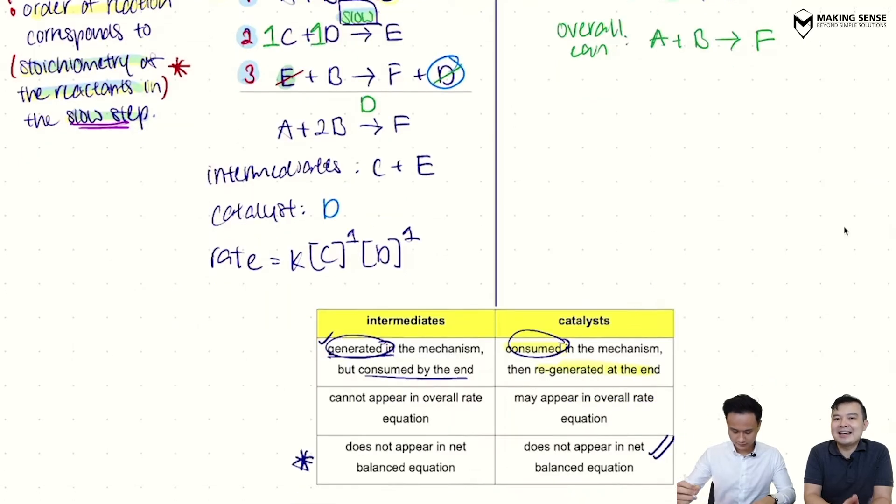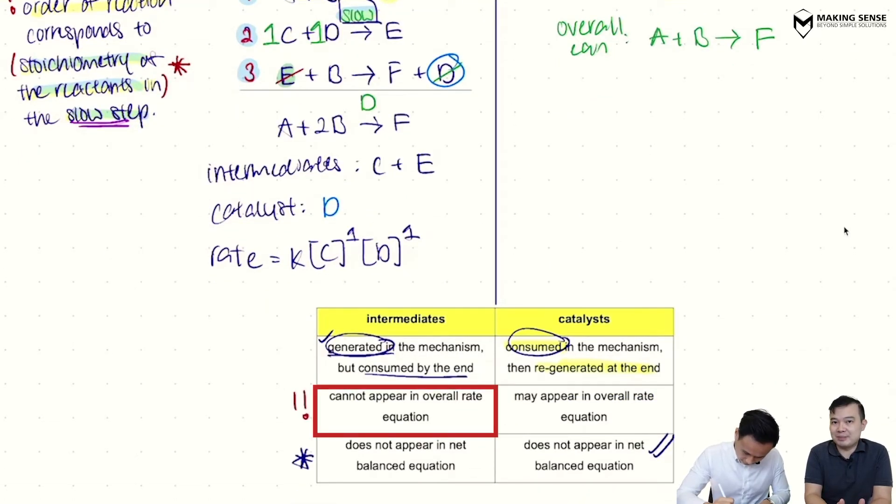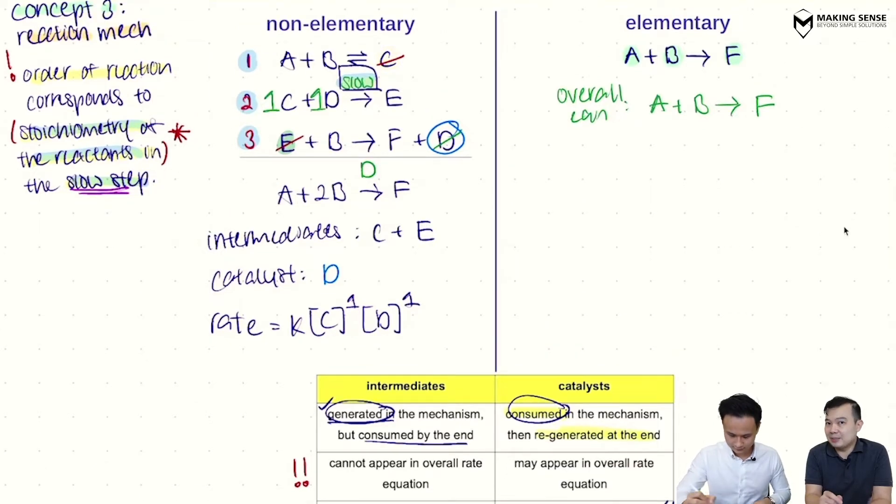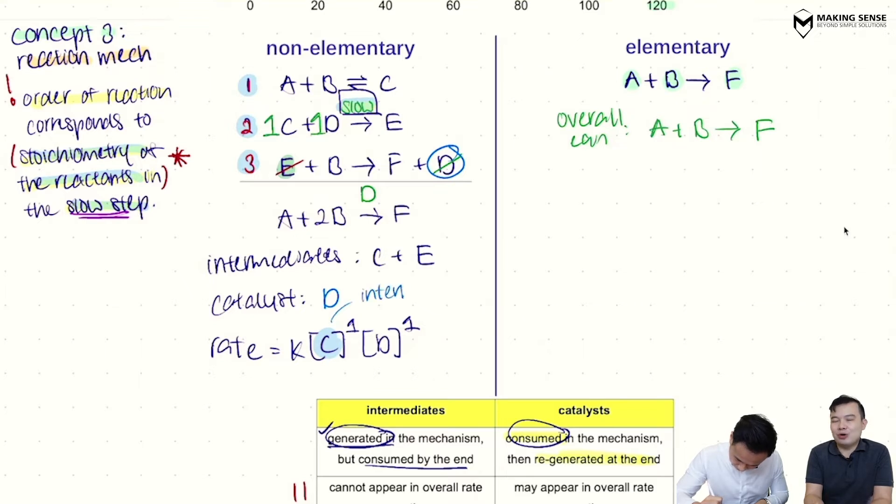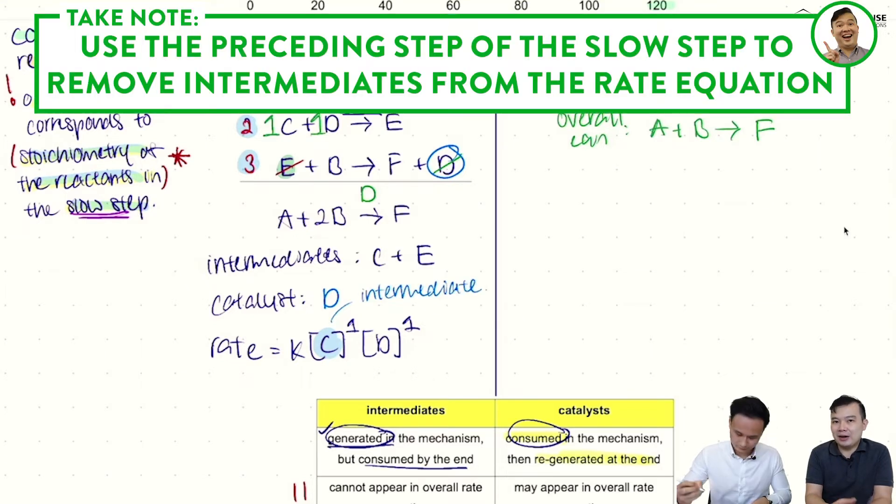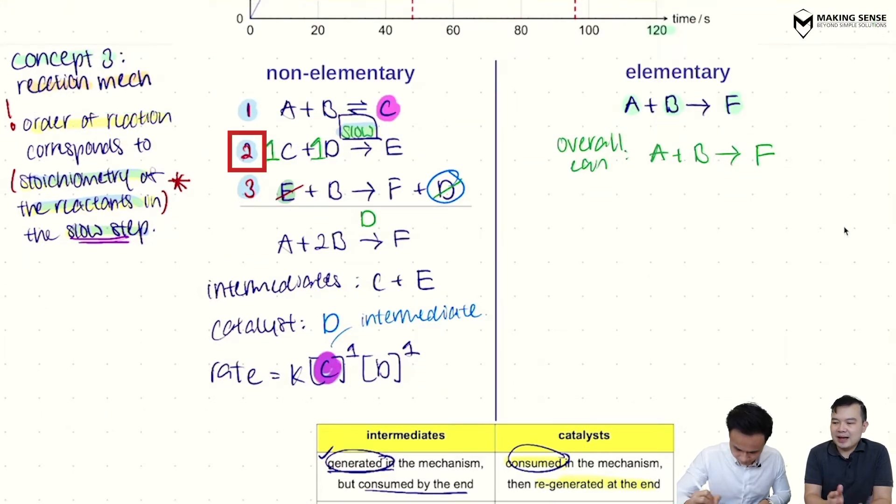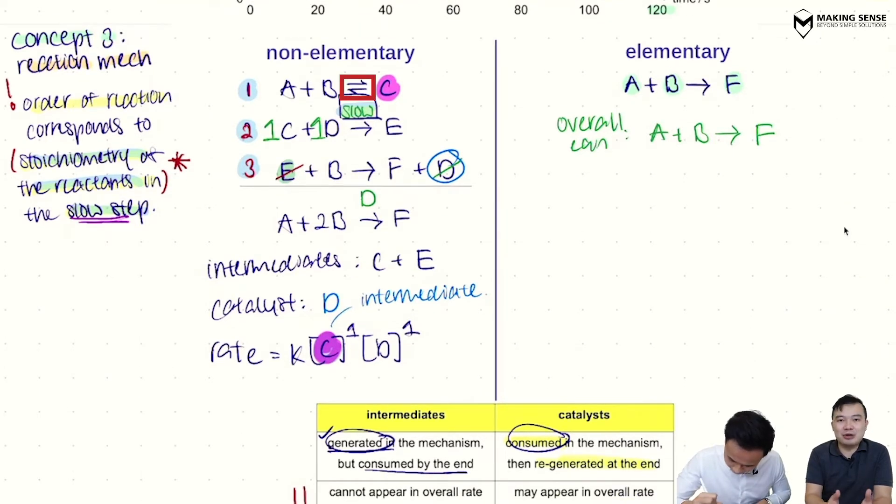Now there's a problem with this rate equation. Because in the table at the bottom over here, there's this very important idea that intermediates can never appear in the overall rate equation. So therefore what I have to do over here is, I need to think of a way to get rid of an intermediate here. When I look at the rate equation that Mr. Ting wrote, there is a C which is going to be the intermediate. So we need to get rid of it. And how do we do that? So it turns out, we always have to use the preceding step from the slow step. So slow step is the second step. I need to pay attention to step one instead. Now step one is actually a reversible reaction.